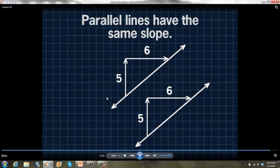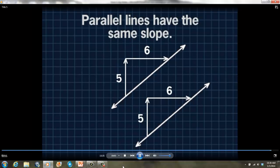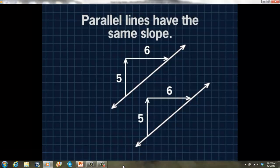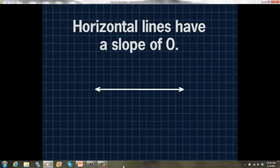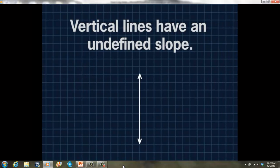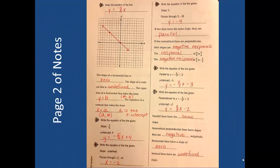Here are some important facts to remember: Parallel lines have the same slope. Non-vertical perpendicular lines have slopes that are negative reciprocals. Horizontal lines have a slope of zero. Vertical lines have an undefined slope. You should now have the second page of notes completed.